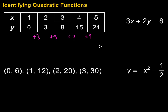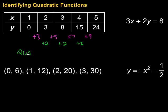They're not the same, so that means it's definitely not linear. But let's check those second differences, because the second differences are what will tell us for sure whether it is quadratic or not. From 3 to 5 is a difference of 2, from 5 to 7 is a difference of 2, and from 7 to 9 is also a difference of 2. So the second differences, shown here in green, are constant — which means yes, this is a quadratic function represented by those ordered pairs in the table.